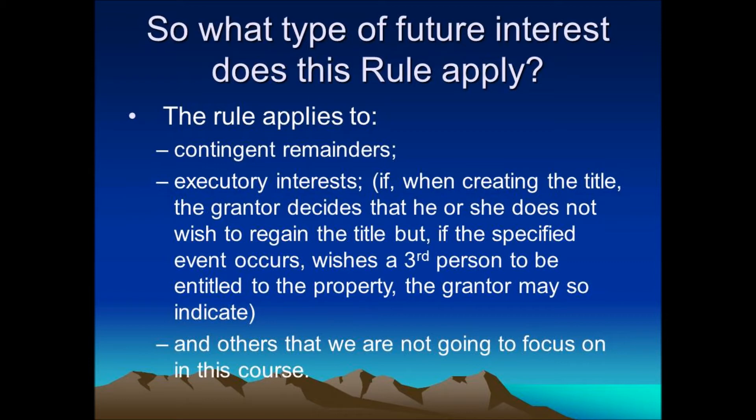What if it's not a will, but a deed? In the case of a deed, the perpetuities period begins to run on the date the deed is delivered with the intent to pass title. Now let's talk about another concept: 'must vest.' To be valid under the Rule Against Perpetuities, it must be shown that the interest created in the transferee must vest, regardless of what might happen, within lives in being plus 21 years.